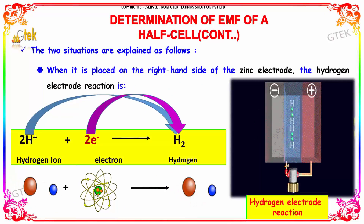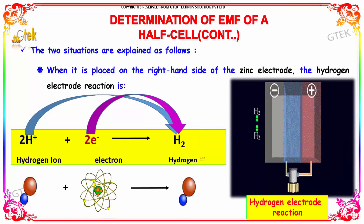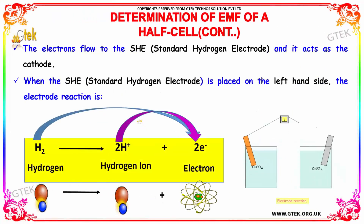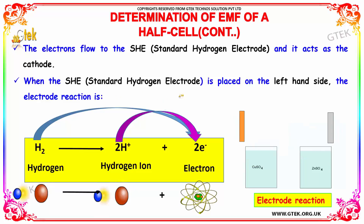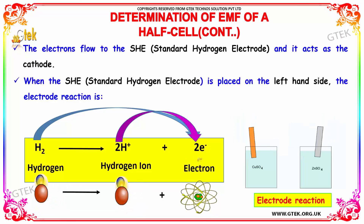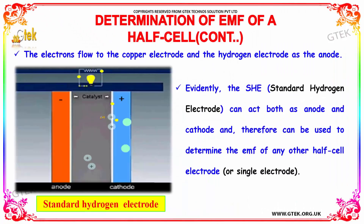The two situations are explained as follows. When the standard hydrogen electrode is placed on the right-hand side of the zinc electrode, the hydrogen electrode reaction is: 2H⁺ + 2e⁻ → H₂. The electrons flow to the standard hydrogen electrode and it acts as the cathode. When the standard hydrogen electrode is placed on the left-hand side, the electrode reaction is: H₂ → 2H⁺ + 2e⁻, and the electrons flow to the copper electrode, making the hydrogen electrode the anode.